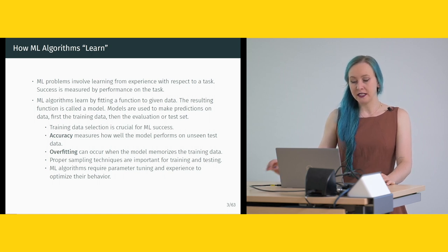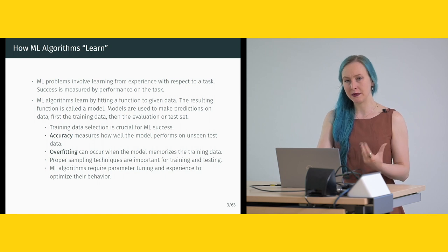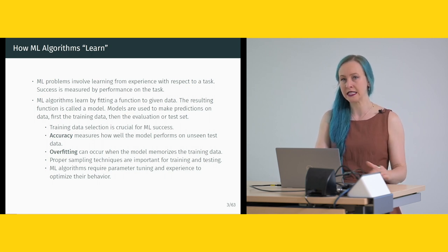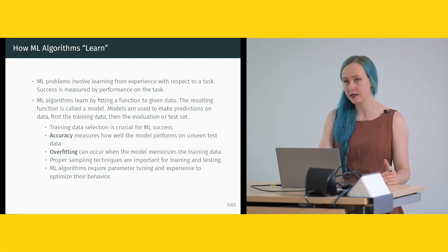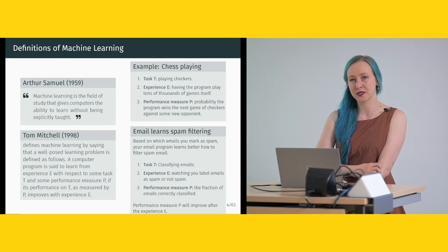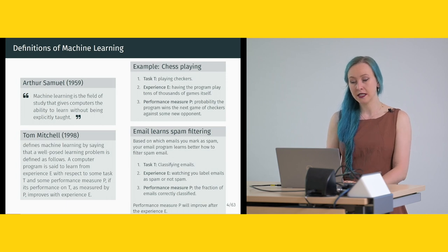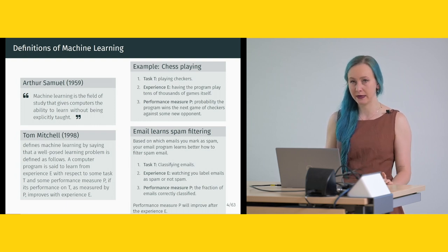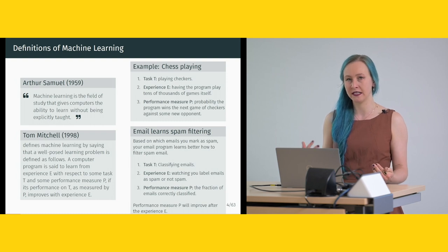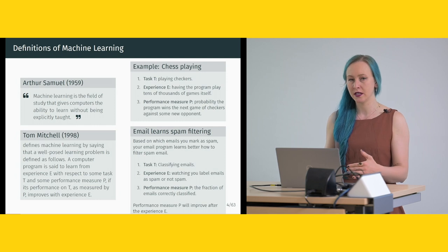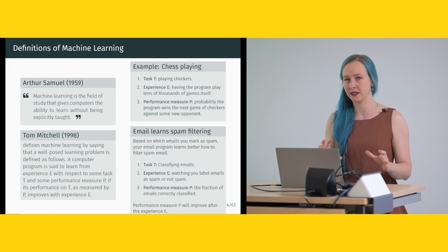Machine learning algorithms require parameter tuning and experience to optimize their behavior. An early definition by Arthur Samuel in 1959 states: machine learning is the field of study that gives computers the ability to learn without being explicitly taught. There are many definitions that also define artificial intelligence slightly differently. AI and machine learning are often conflated, but they don't mean the exact same thing — a distinction I will make on a later slide.